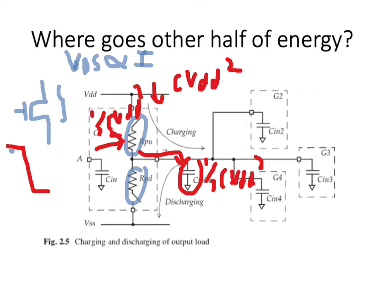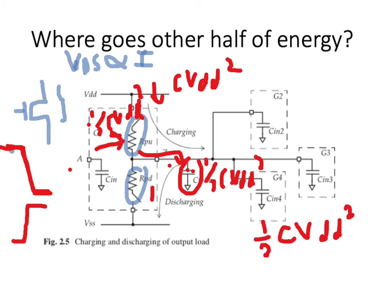The supply provides C·VDD² of energy, of which only ½·C·VDD² is stored in the capacitor during the high-to-low transition. The other half C·VDD² is consumed as work done by the PMOS to transfer that energy into the capacitor. So the charging of the capacitor in response to the high-to-low transition consumes ½·C·VDD² of energy in the PMOS, and during the low-to-high transition the switching operation also consumes the ½·C·VDD² stored in the capacitor as the logic level changes from 1 to 0 at the output node.